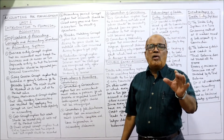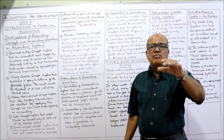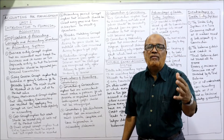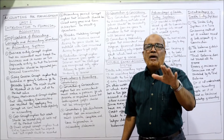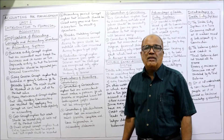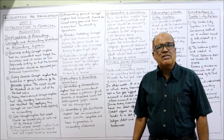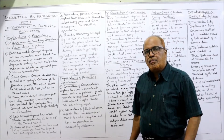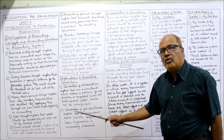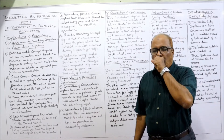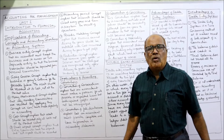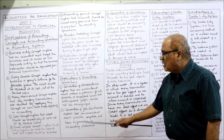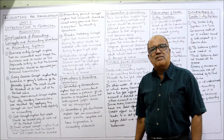Now, what are the implications of accounting conventions? Conventions are the customs or traditions which every accountant follows when preparing financial statements. There are four accounting conventions. What is the implication of following those accounting conventions? The first convention is conservatism.